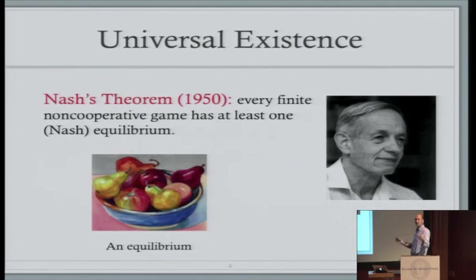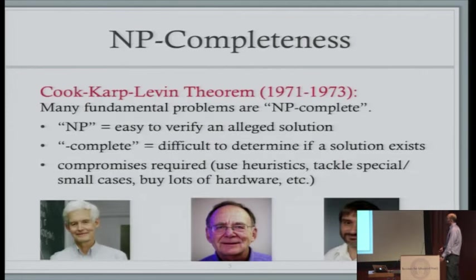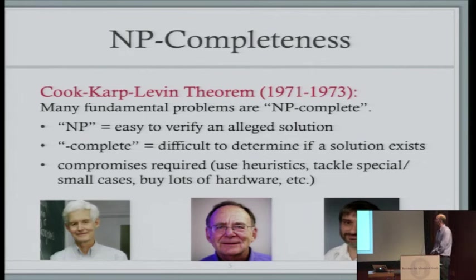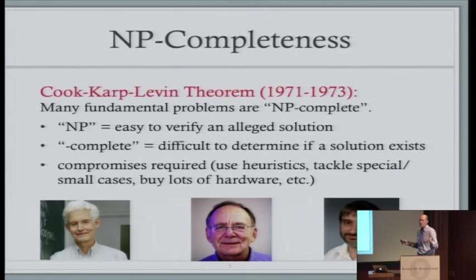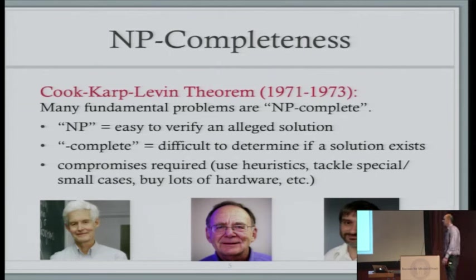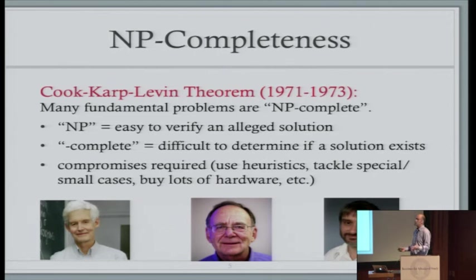On the computer science side, a couple of decades later, we have the invention of NP-completeness by Cook, Karp, and Levin. NP-completeness was telling computer scientists that we're almost never going to be able to get what we want. Computer scientists want efficient computation — good algorithms for fundamental problems like predicting protein folding, scheduling airplanes, or finding patterns in social networks. Most computational problems of this sort are NP-complete, meaning very difficult to solve computationally in any general-purpose way.